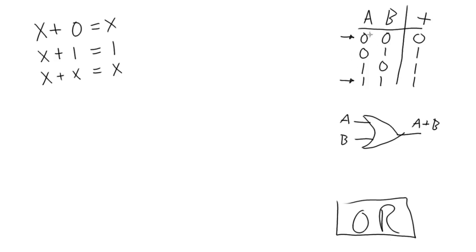And we see if the input is a 0, the output is a 0. If the input is a 1, the output is a 1. So therefore, if we have X OR'd with X, we can just reduce that down to X.